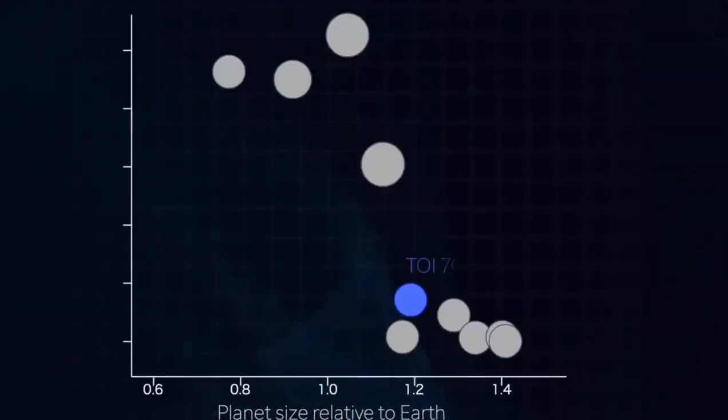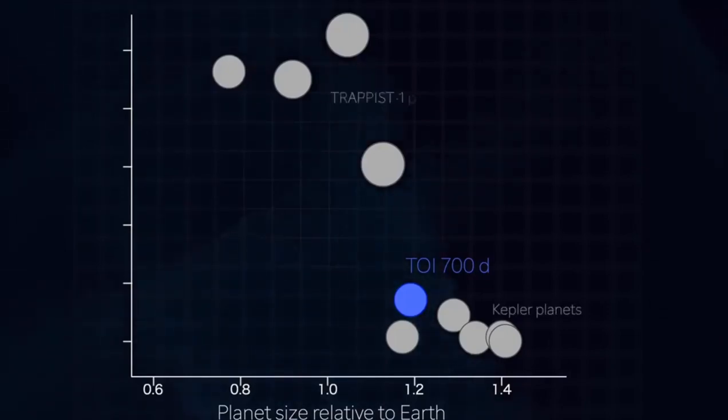TOI 700d is one of only a few Earth-sized planets found in potential habitable zones. Others include discoveries by Kepler and several planets in the TRAPPIST-1 system.